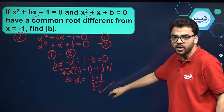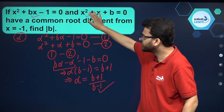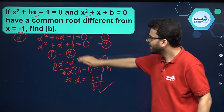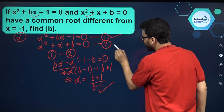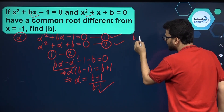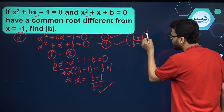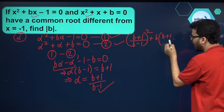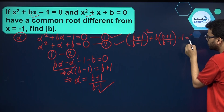Alpha equals (b+1)/(b-1). Now we have to find the value of b. We substitute alpha = (b+1)/(b-1) into the first equation: [(b+1)/(b-1)]² + b·[(b+1)/(b-1)] - 1 = 0.